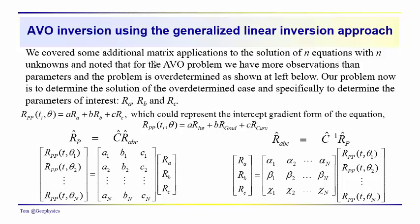Up to this point, we've talked about several approaches to matrix inversion. We used a 2x2 matrix and a 3x3 matrix as examples, and we've gotten to the point where we're dealing with the AVO problem. We realize that we have an over-determined case where we usually have N equations with N unknowns, but for the AVO problem we have more observations than unknowns, and so the problem is over-determined.